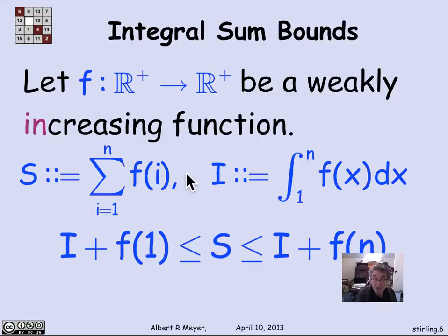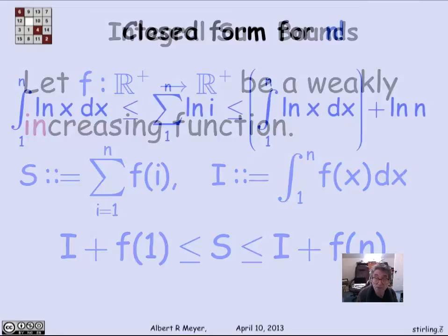And the theorem says that with increasing functions, s is bracketed between the integral plus the last term in the sum and the integral plus the first term in the sum. Since the function's weakly increasing, f of 1 is smaller than f of n, so that's the way you remember which way the bounds go. So s is between i plus f of 1 and i plus f of n by our general formula for applying integral bounds to sums.